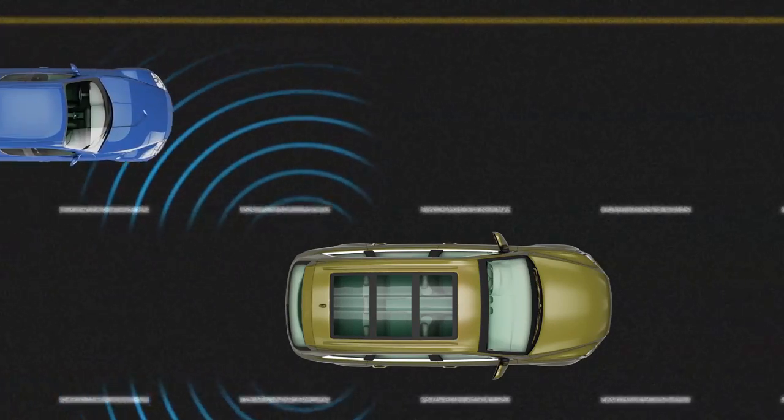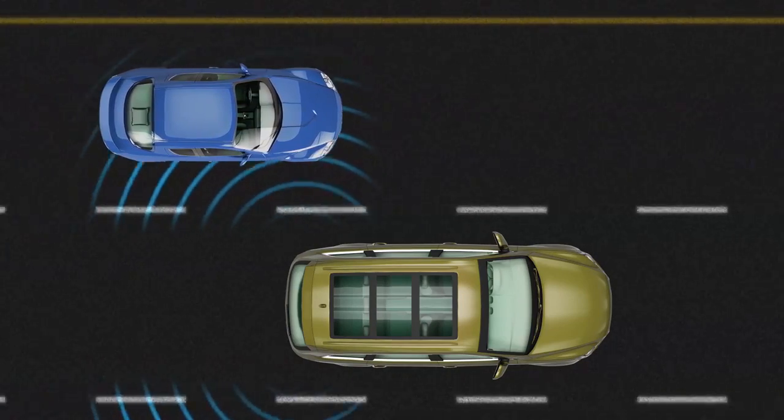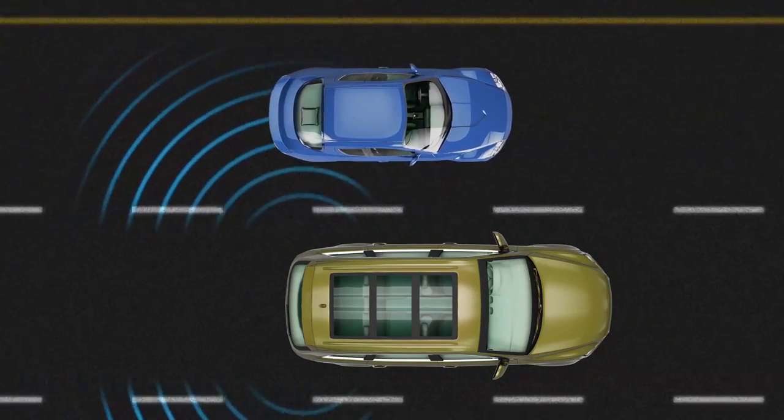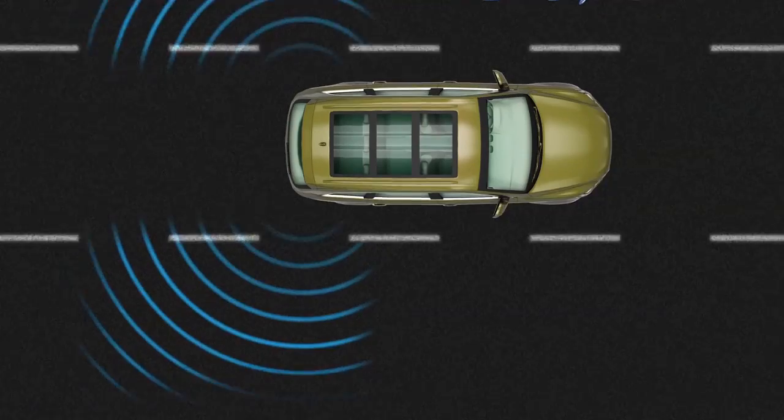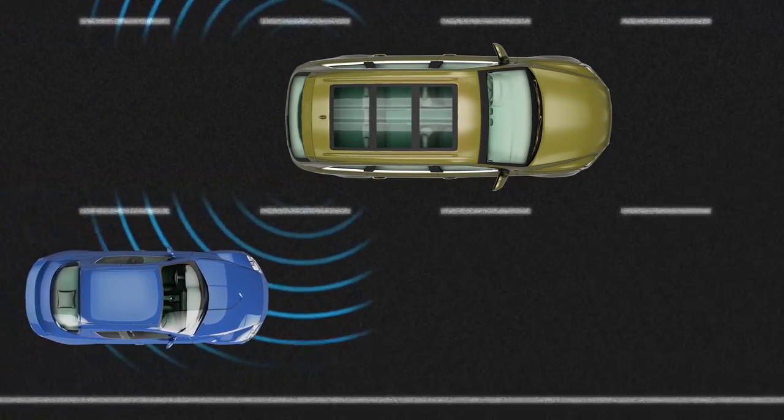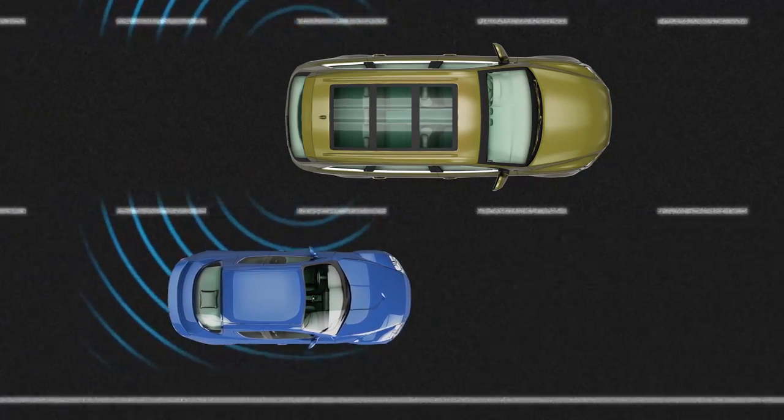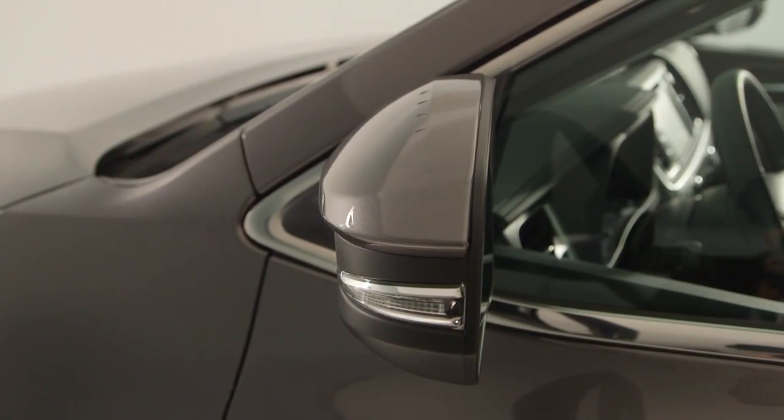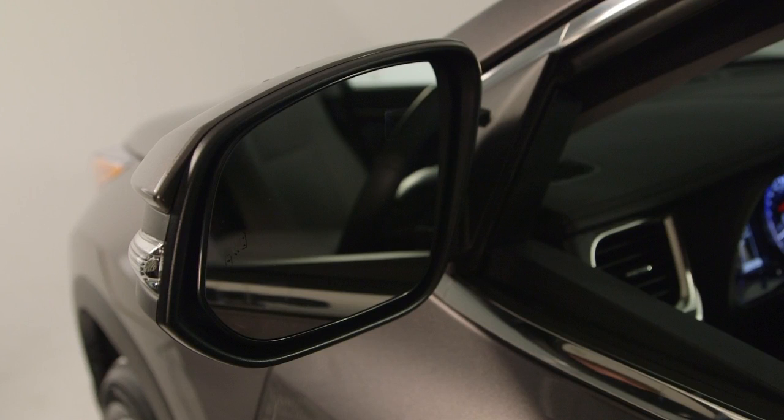The Blind Spot Monitor function detects vehicles traveling in the same direction in an adjacent lane that may be in the blind spot, not visible in the outside rearview mirror, and advises the driver of their existence. When a vehicle is detected in the blind spot area on either side of the vehicle, if the turn signal is not activated, an indicator light comes on in the outside mirror on that side.